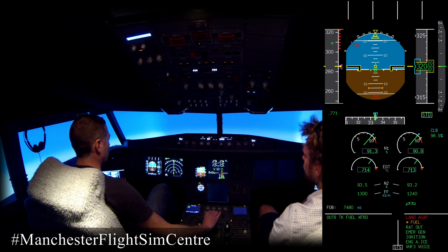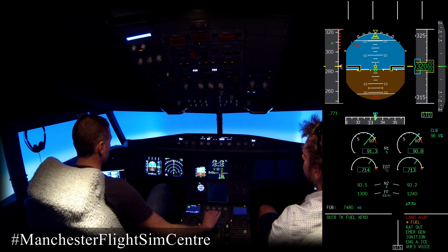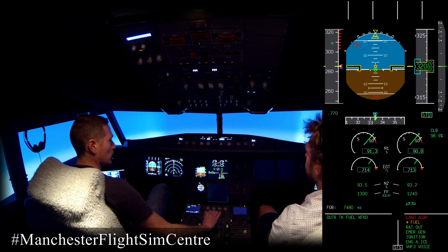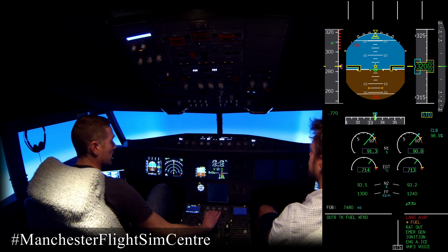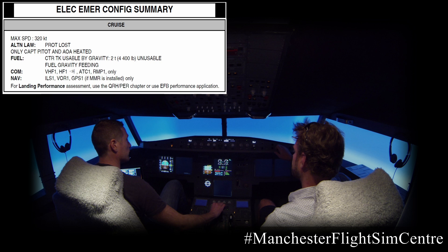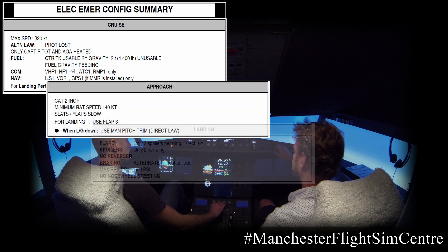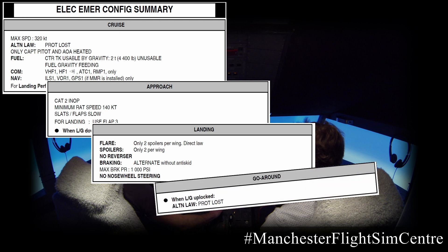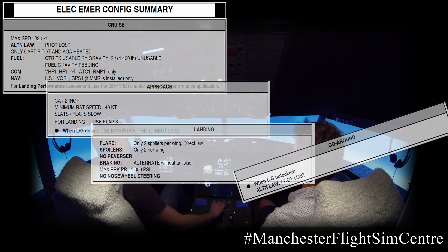Maintaining flight level 320, currently heading 335 degrees. We have spoken to ATC. Not putting the cabin crew on station at this time. Let's consider a T-DOTA. Time wise, fuel is not an issue — normal fuel burn, seven and a half tons, dual endurance is not a problem. We have a red Land ASAP, so we need to find a nearby safe, suitable place to land. Once ECAM actions are completed, the pilot monitoring will refer to the corresponding electrical emergency config summary.